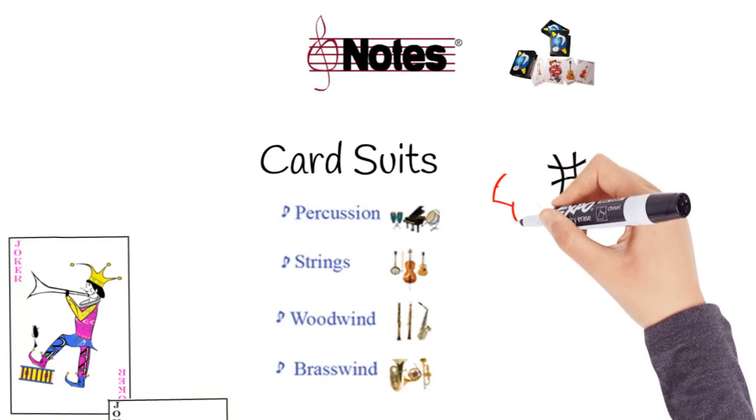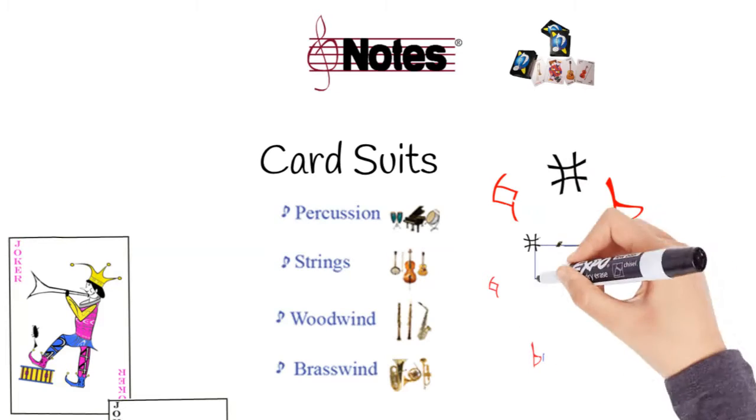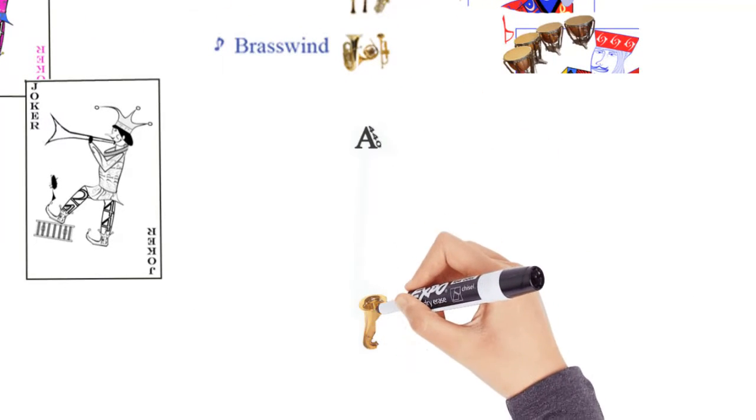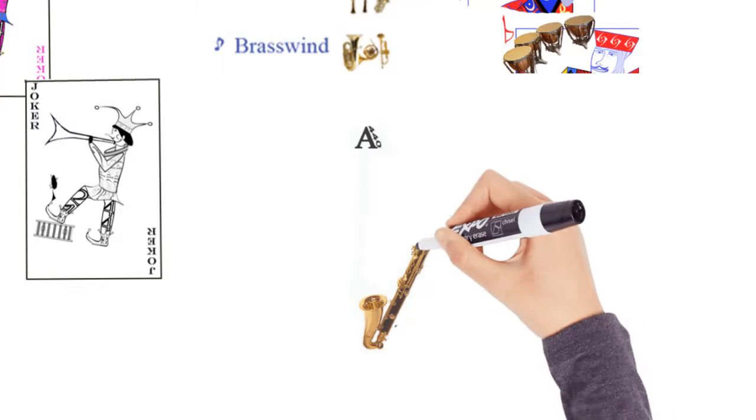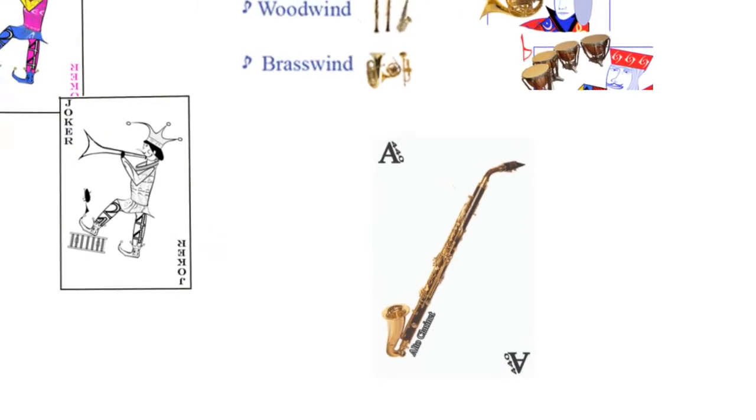Notes uses musical sharps, naturals, and flats to identify the king, queen, and jack. Aces are represented by the letter A. A440 is the tuning vibration for the orchestra and it also begins with the letter A - a perfect match for the ace.